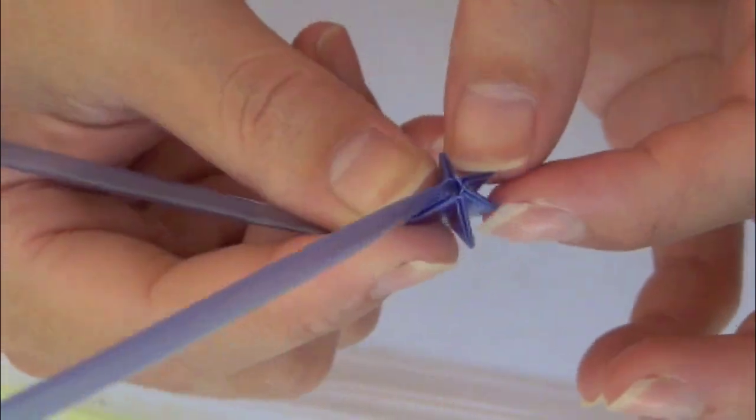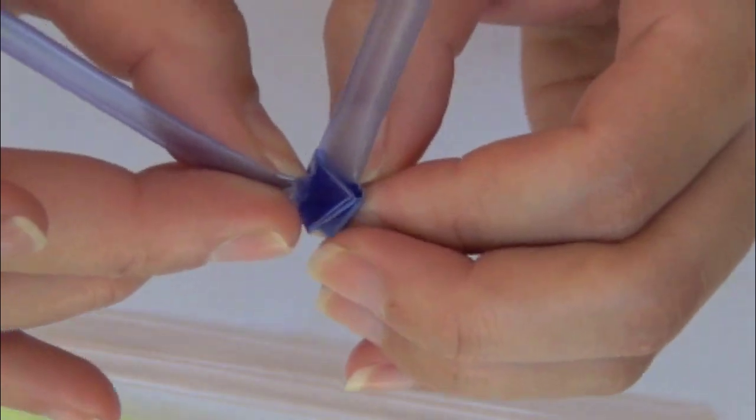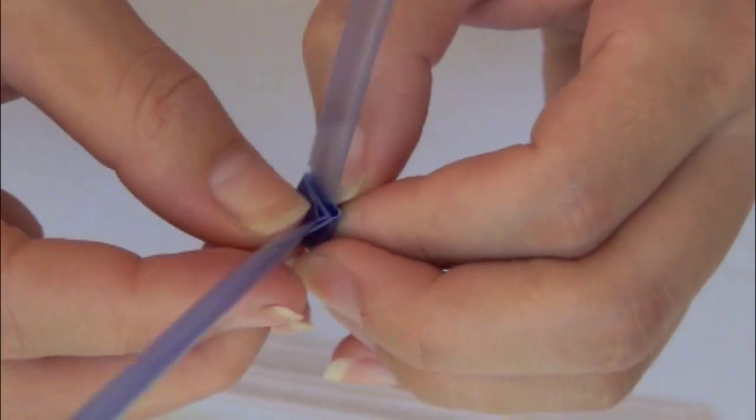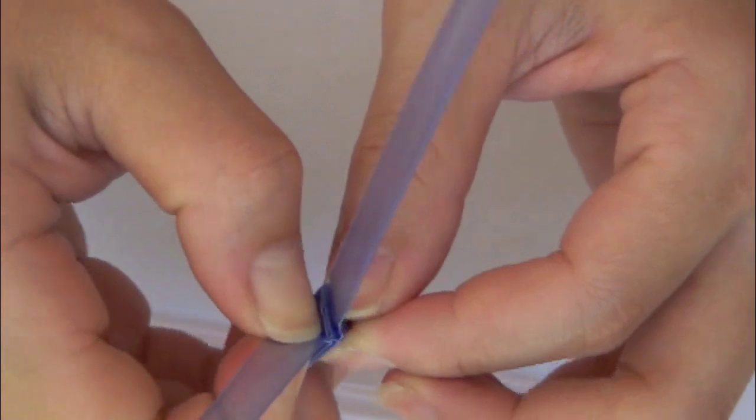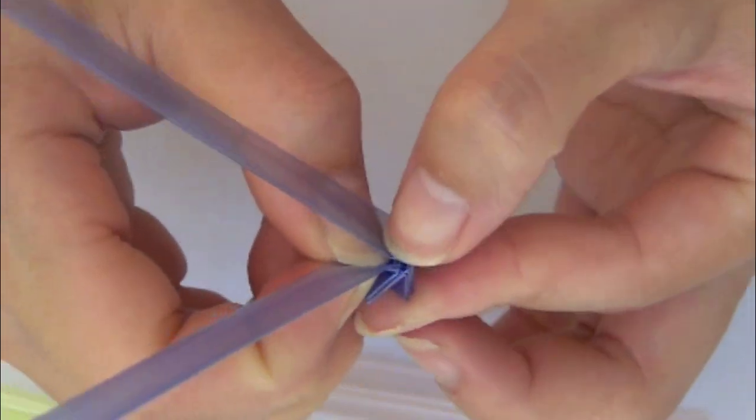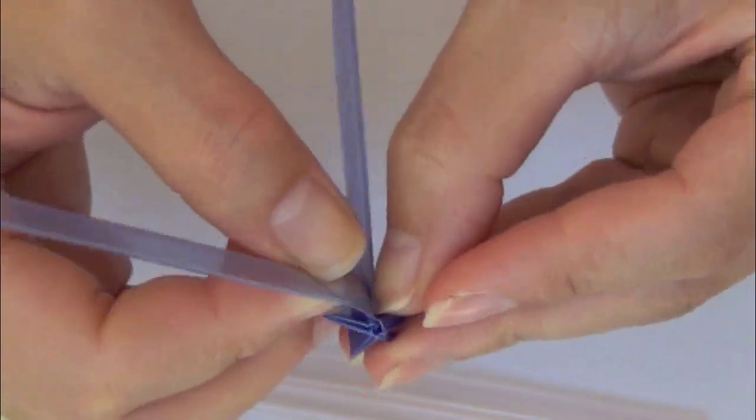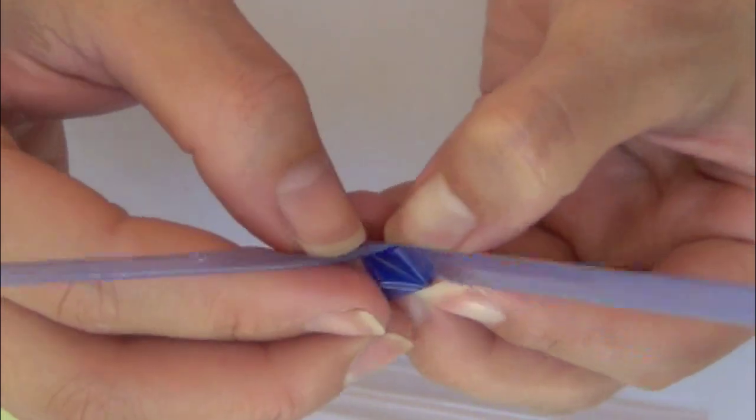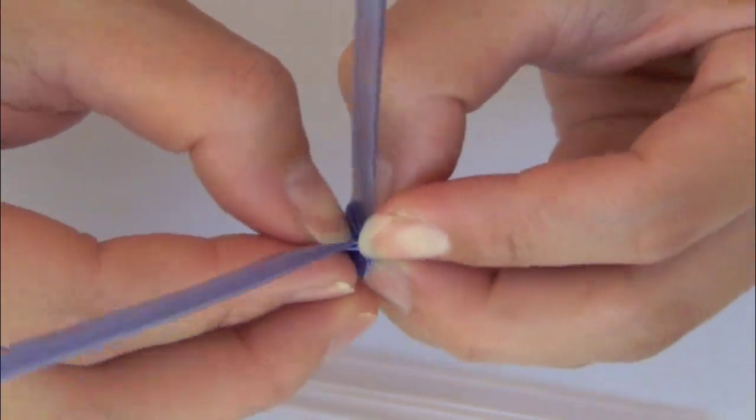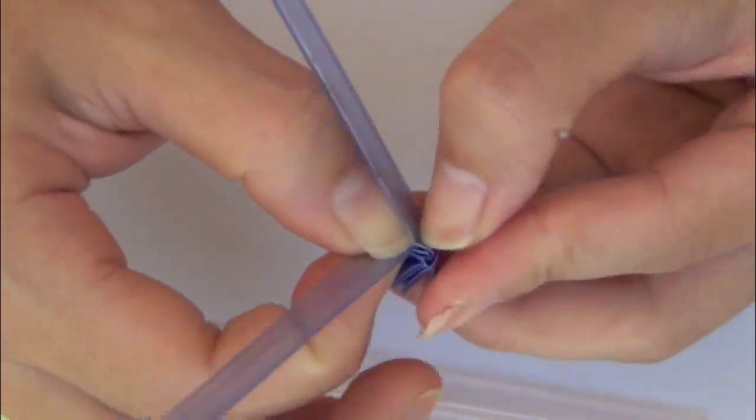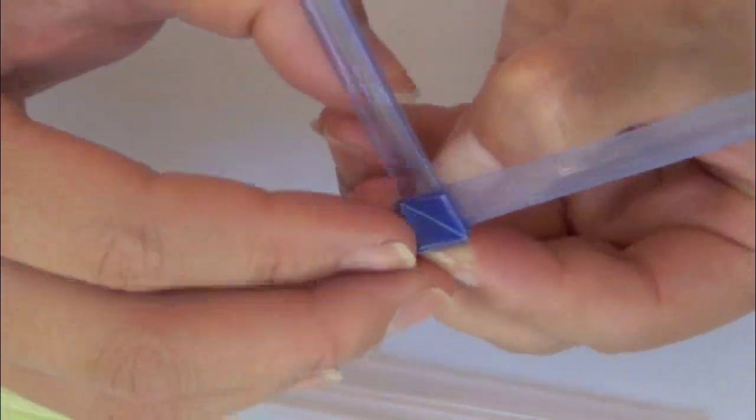This is kind of the hardest part, it's looping the stars together. Basically, you are taking the first triangle that you make and wrap the existing loose straw over it. So if you look really carefully, all you see is just crisscrossing and wrapping the straw over each triangle.